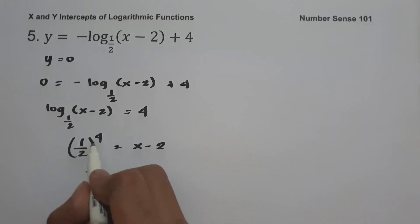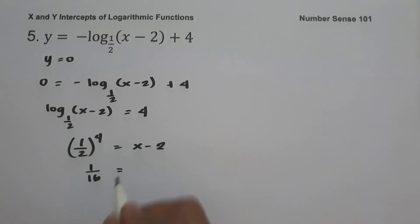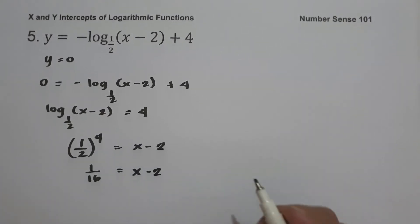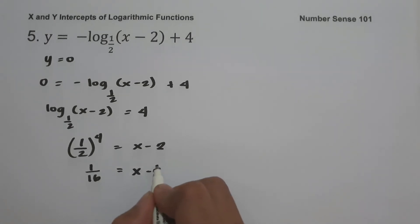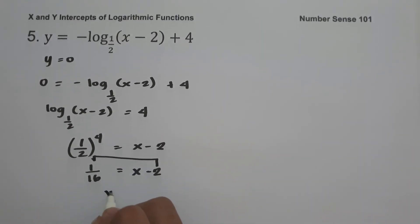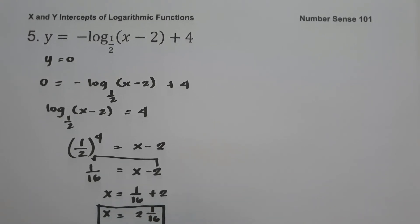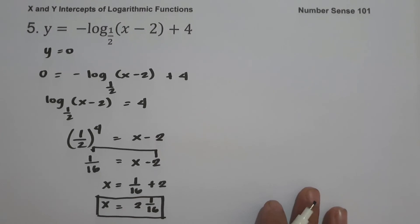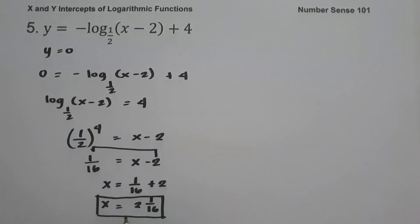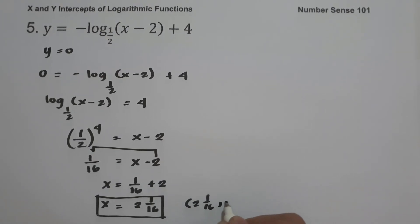One-half raised to 4 is 1/16 — that means you distribute the exponent to the numerator and denominator. So we have 1/16 equals x minus 2. Let us move negative 2 to the other side: x equals 1/16 plus 2, which is 2 and 1/16. Since the value of y is 0 and x is 2 and 1/16, our x-intercept is (2 1/16, 0).